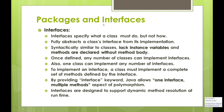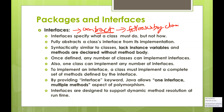An interface basically defines what is called a contract. That contract must be followed by classes that implement that particular interface. The interface specifies what a class must do — it does not depend on or specify any implementation. It just declares a set of rules which need to be followed by the class.